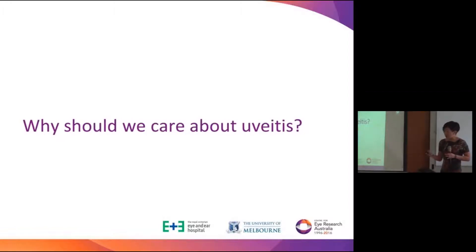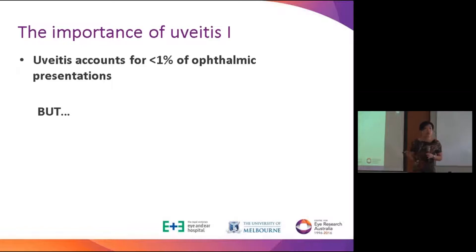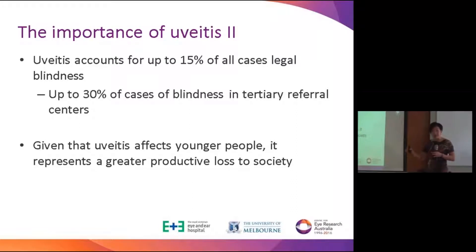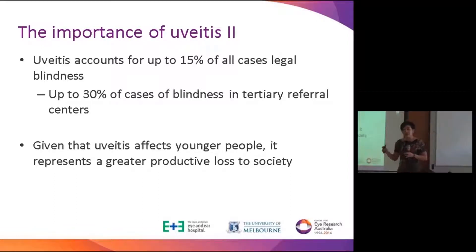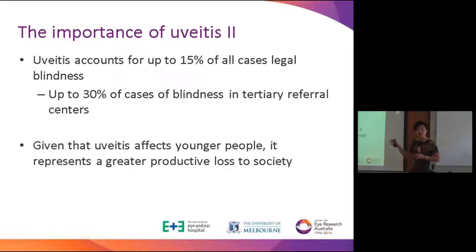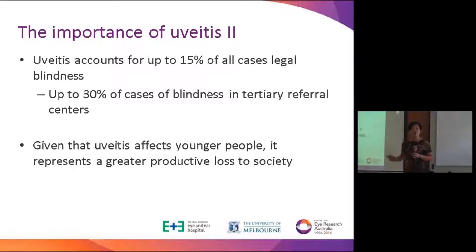Why should you care about uveitis? Around the world it accounts for less than 1% of all ophthalmic conditions, but it punches above its weight in irreversible blindness — accounting for 30% of blindness at my institution. Unlike glaucoma and age-related macular degeneration, uveitis affects the young and working population, so the economic cost to society is far greater. That's why it's important and one of my passions.